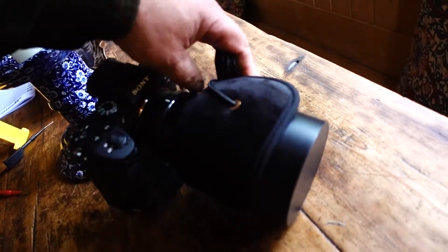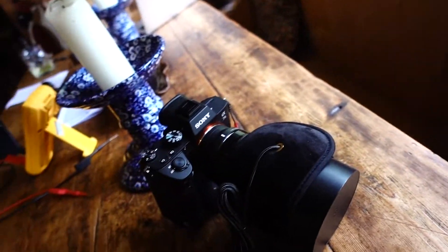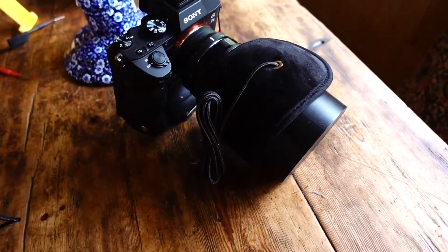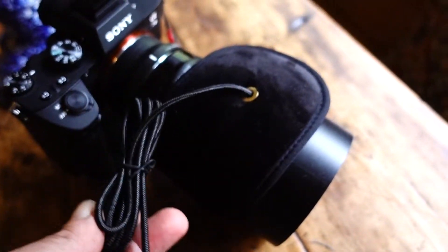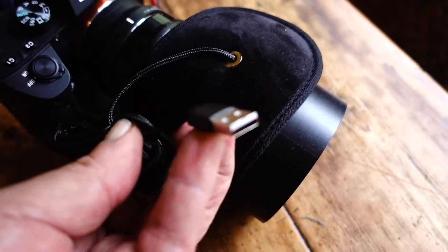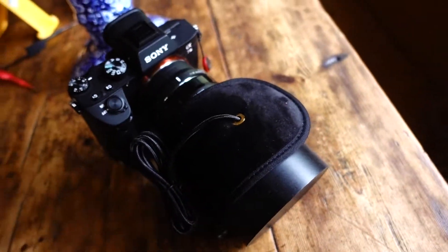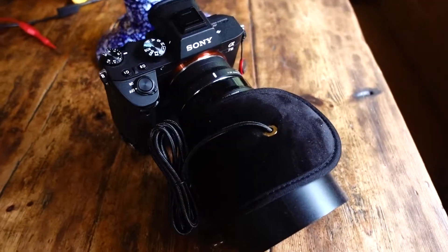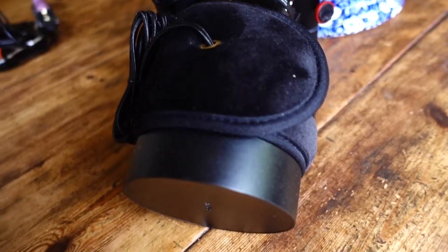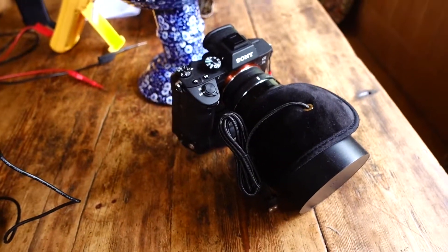Now, the other thing you can use, also available on Amazon for about 20 pounds, looks like a woolly blanket. But it plugs into USB and uses the USB power to heat up this thing. And it actually works very well.